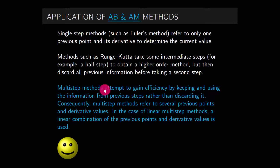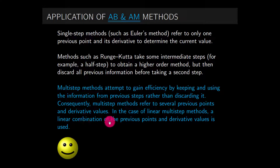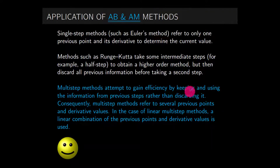In multi-step methods, we attempt to gain efficiency by keeping and using the information from previous steps rather than discarding it. Consequently, multi-step methods refer to several previous points and derivative values. In the case of linear multi-step methods, a linear combination of the previous points and derivative values is used. So basically we are going to use multi-step methods and their linear combinations with previous points.